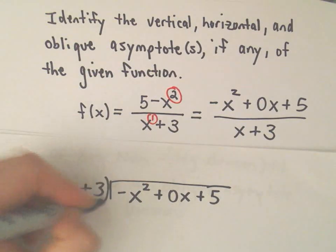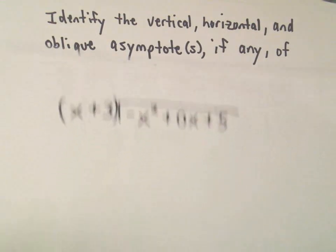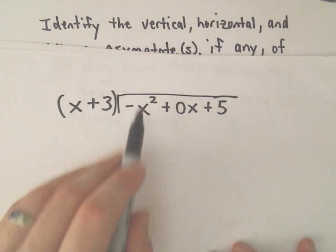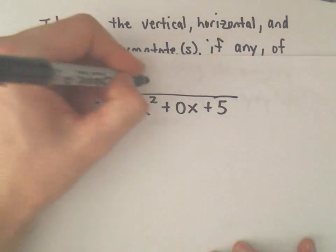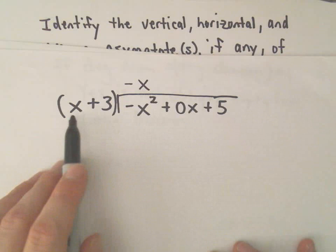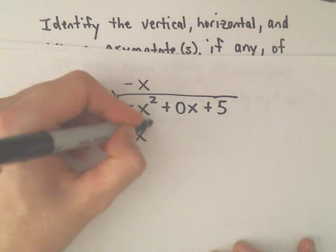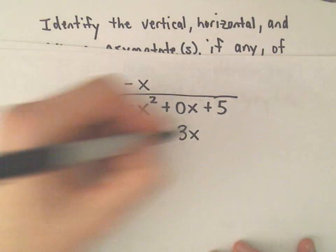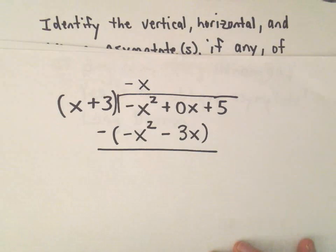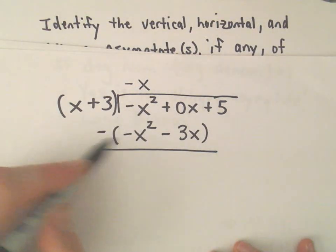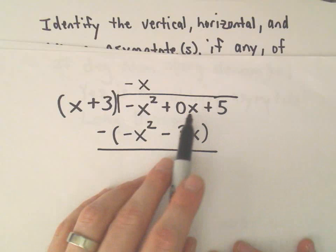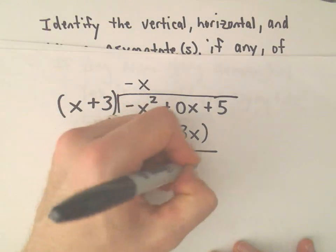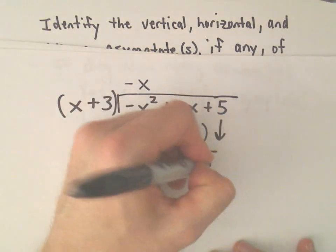Alright, I always put this in parentheses to remind myself I'm going to have to distribute here in just a second. So, the way I think about it is, x multiplied by what is negative x squared? Well, we would need a negative x. And then we multiply. Negative x times x is negative x squared. Negative x times positive 3 will be negative 3x. And then we have to take this entire quantity and subtract it all. So, negative x squared minus negative x squared, those just cancel out. Well, 0x minus negative 3x will give us 0x plus 3x. And then we can simply drop down our positive 5.